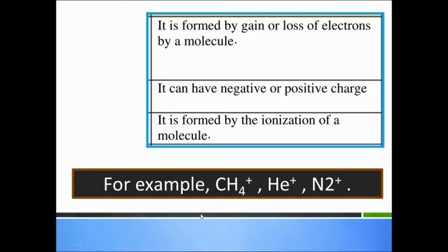Further examples of molecular ions include the acetate ion. A molecular ion is formed by the gain or loss of electrons by a molecule; it can have a negative or positive charge. It is formed by the ionization of a molecule. Examples: methane ion (CH₄⁺), helium ion (He⁺), nitrogen ion (N₂⁺).